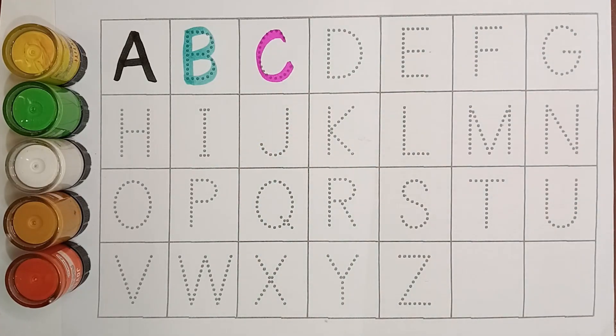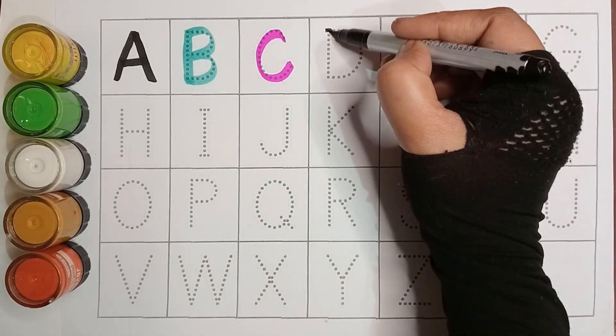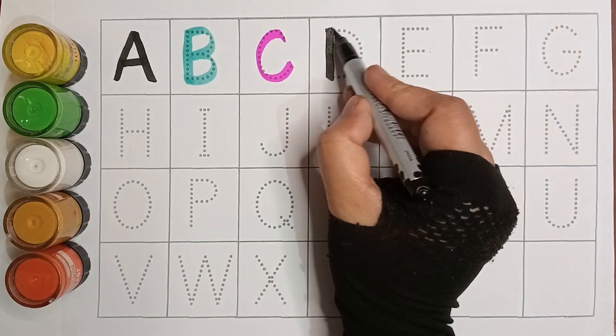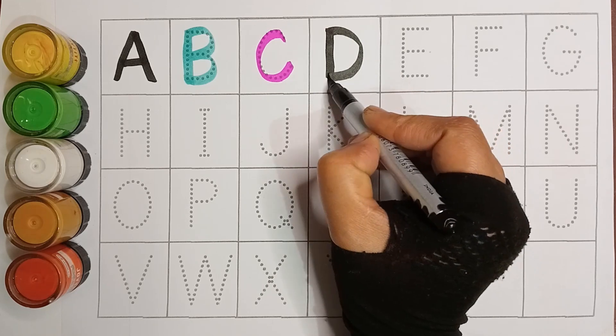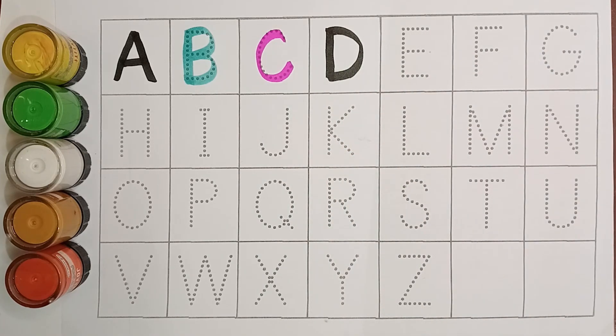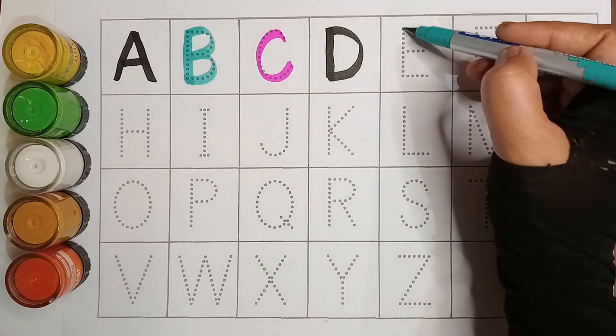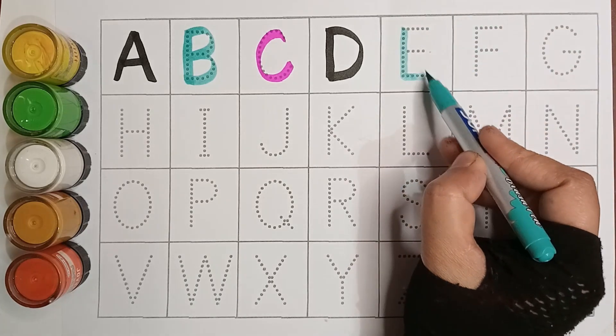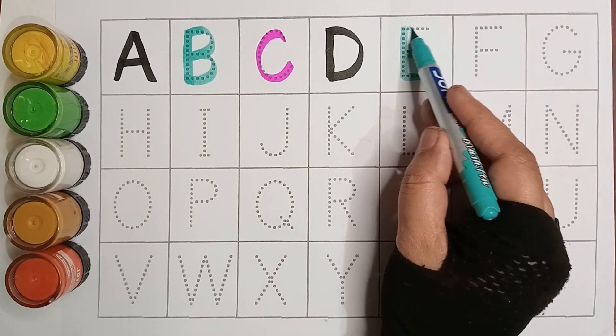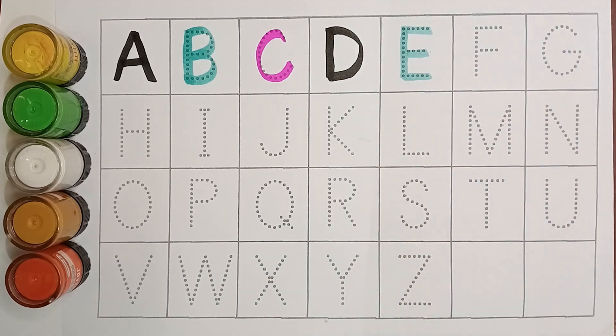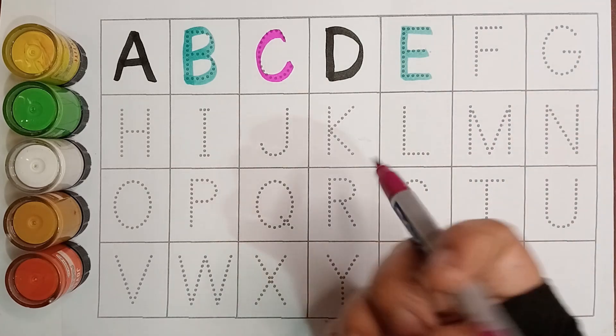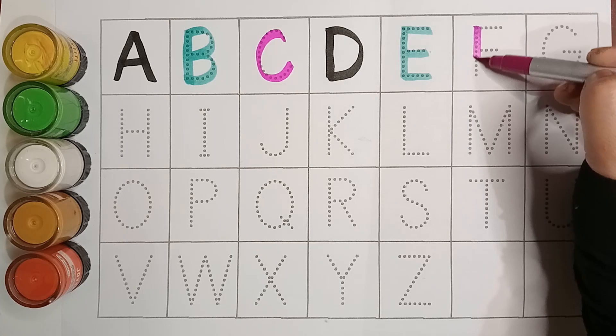Black color. D, D for Dog. Sea green color. E, E for Elephant. Pink color. F, F for Fish.